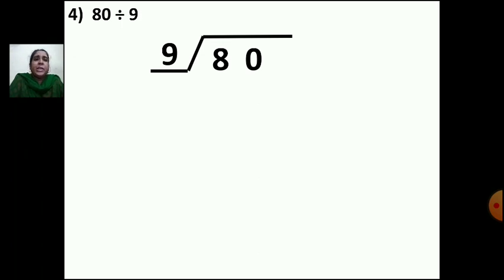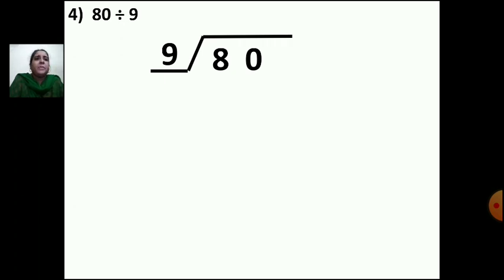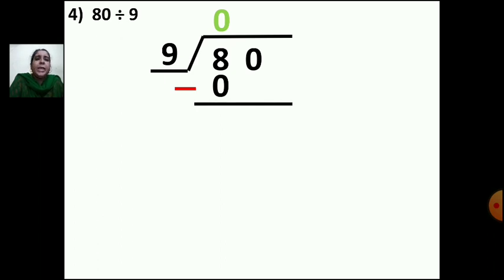Now let us do the fourth sum: 80 divided by 9. Write 80 inside and divisor 9 outside. Take one number: 8 is small, 9 is big, so you cannot take 9 ones. Take a smaller number — 9 zeros are 0, which is smaller than 8. Write 0 up and 0 below 8, then put the minus sign and draw the line. 8 minus 0 gives 8. Bring the next number down with one arrow — bring 0 down. Now you have 80.